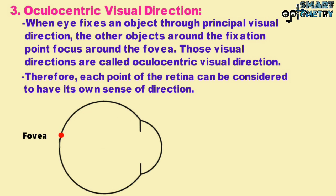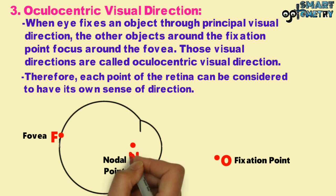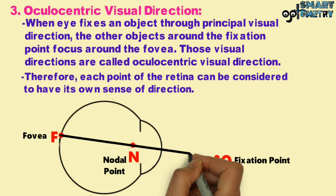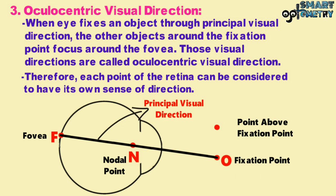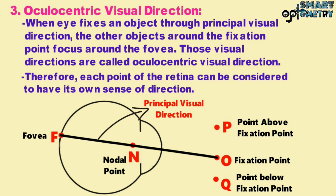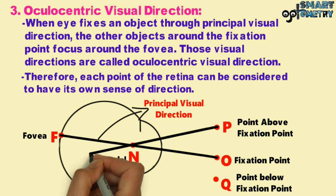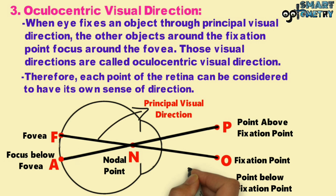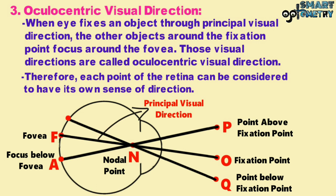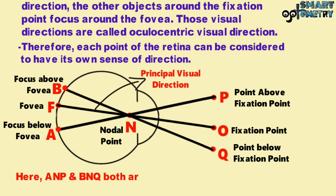In the diagram, the fovea is represented by point F, the fixation point by O, and the nodal point by N. The line of sight joining the fovea and the fixation point while passing through the nodal point is the principal visual direction. The point above the fixation point is P and the point below is Q. The line of sight from point P passes through the nodal point to focus below the fovea at point A, and from point Q focuses above the fovea at point B. The lines of sight A-P and B-Q are both oculocentric visual directions.